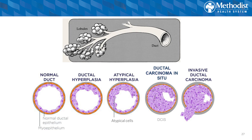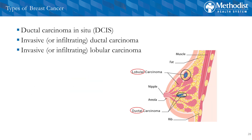When it breaks outside of the duct, that is when it becomes invasive. So the types of breast cancer: ductal carcinoma in situ as mentioned; invasive ductal carcinoma — cancer starting in the duct, now outside of the duct; and invasive lobular carcinoma — starting in the lobule, now outside of the lobule.